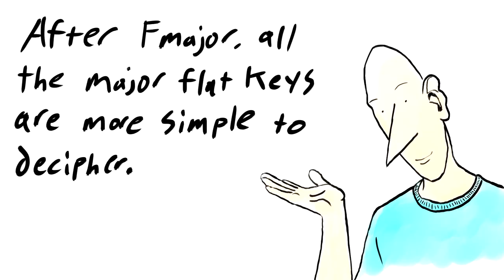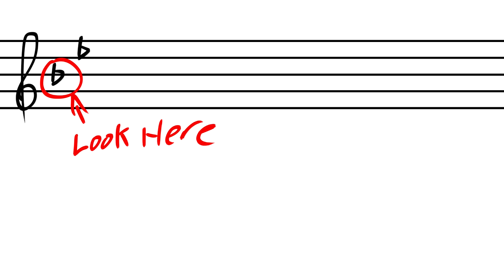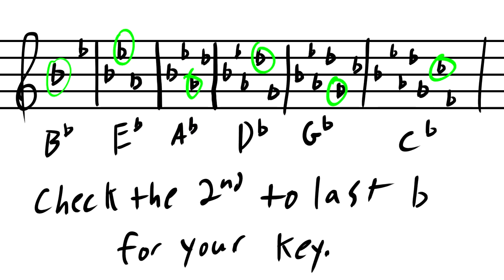The major keys, on the other hand, are much more simple to decipher after that first flat. If we get to the next flat, E flat, now we just look at the second to the last flat we added, and that's the new key, if it's major. That's really all there is to that one. So in this case, adding that extra E flat now makes it a B flat key. So check it out. Wow, that was a lot.